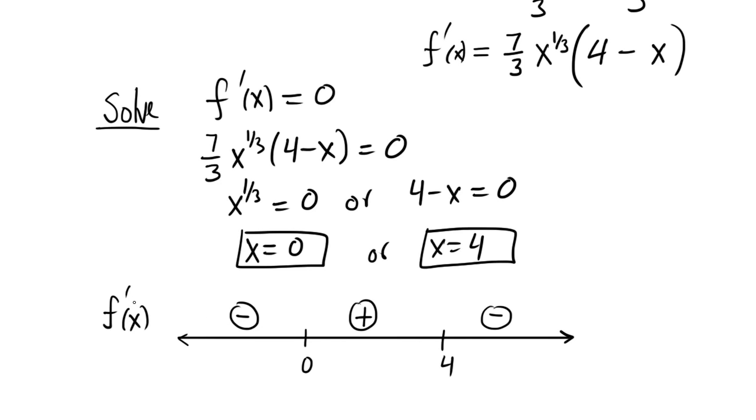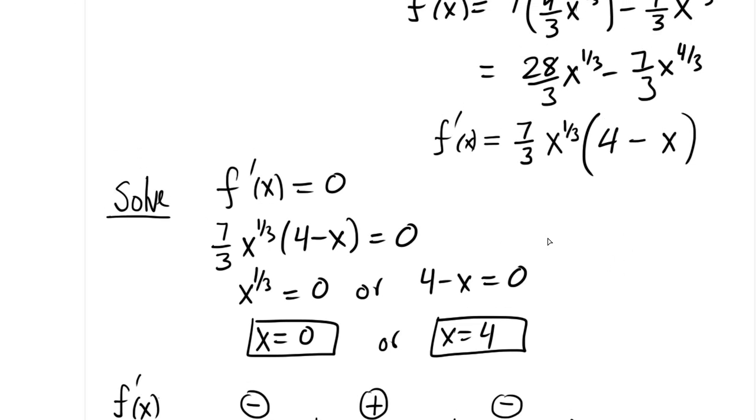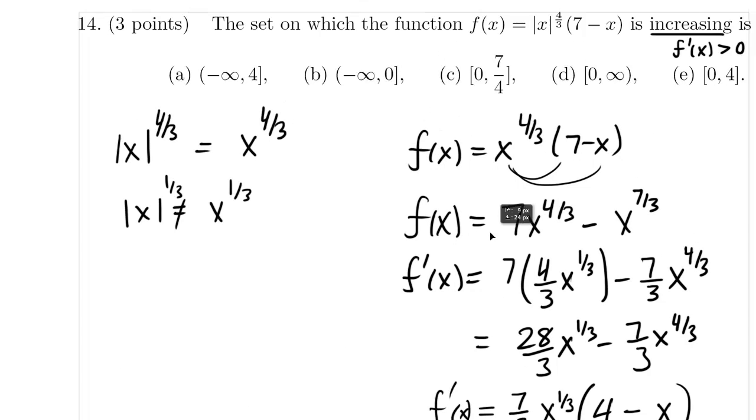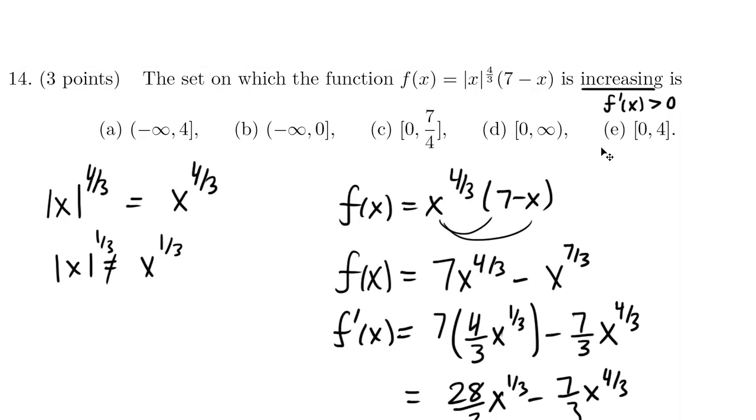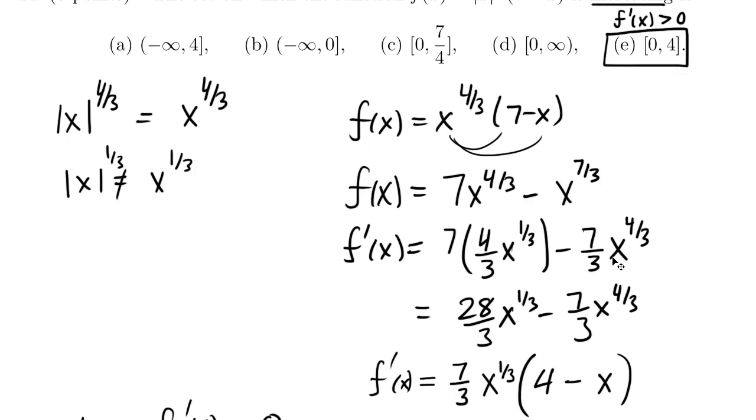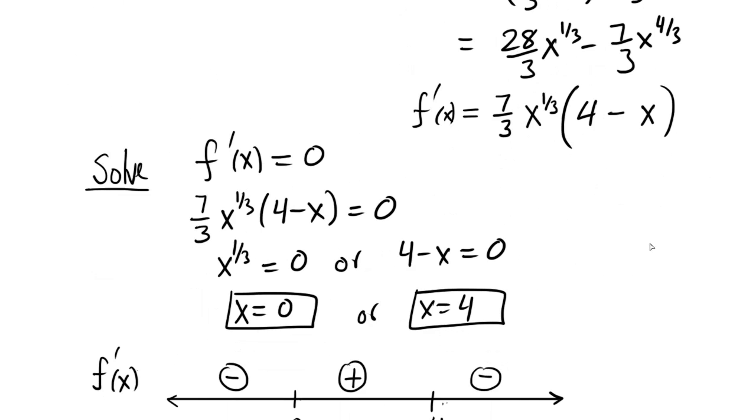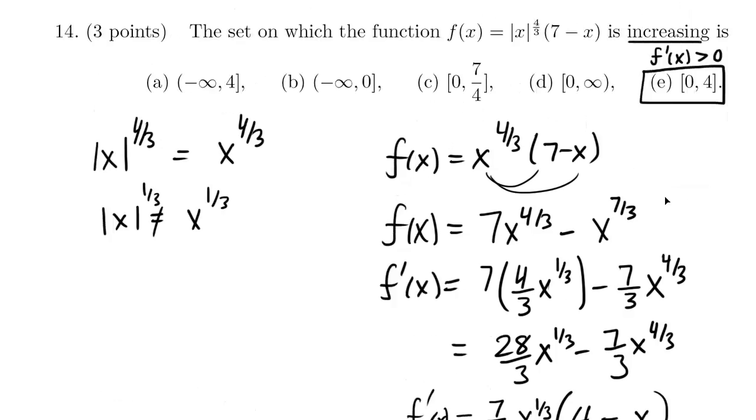Now remember, f prime is increasing wherever the derivative is positive. So we've just identified on the interval 0 to 4, the derivative is positive. So that means on the interval 0 to 4, the function is increasing. So let's see if they have the interval 0 to 4 as one of the answers. And they do. So it's increasing on the interval 0 to 4.